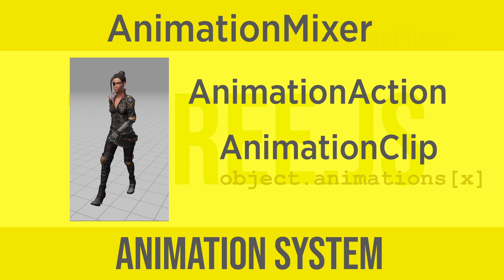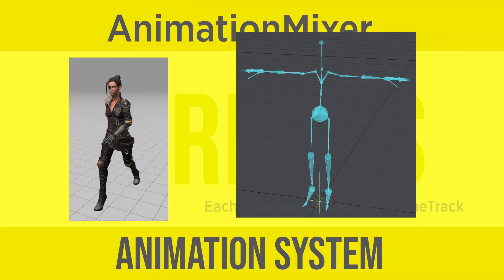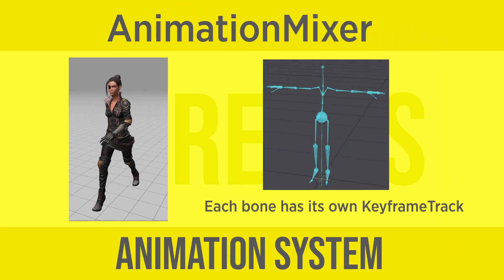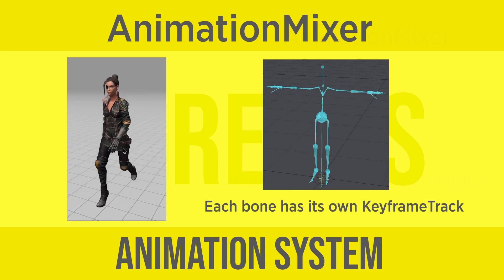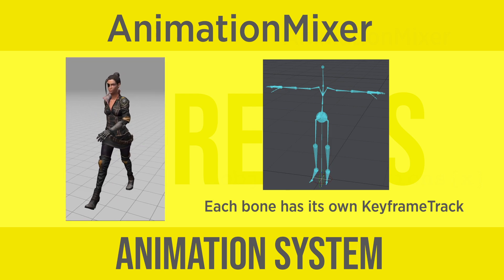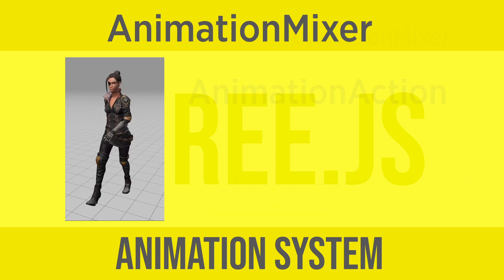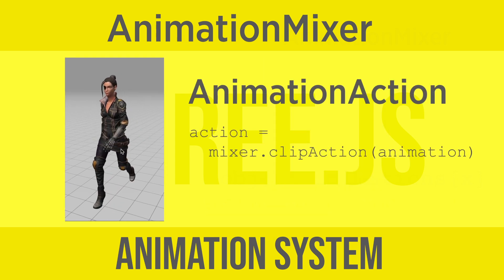Suppose a hierarchy of a skinned mesh contains a hips object, which has got a right and a left thigh attached, and so on. Then each part of this skinned mesh will have its own keyframe track. You create an animation action using the clip action method of the mixer class.